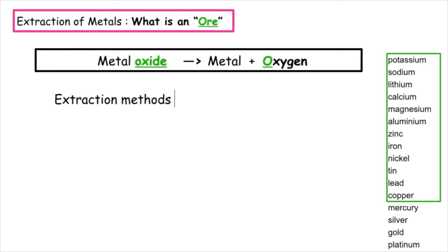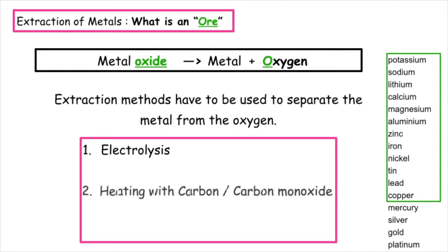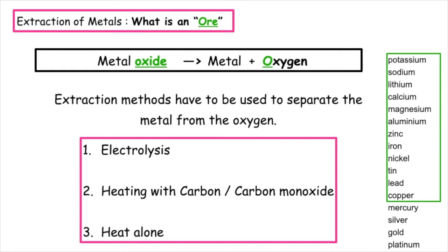Extraction methods have to be used to separate the metal from the oxygen in the metal oxides. There are three different techniques to extract the metal: the first is electrolysis, the second is heating with carbon or carbon monoxide, and the third is using heat alone.